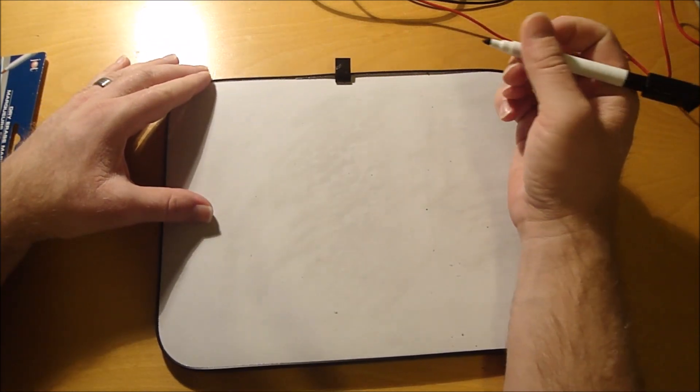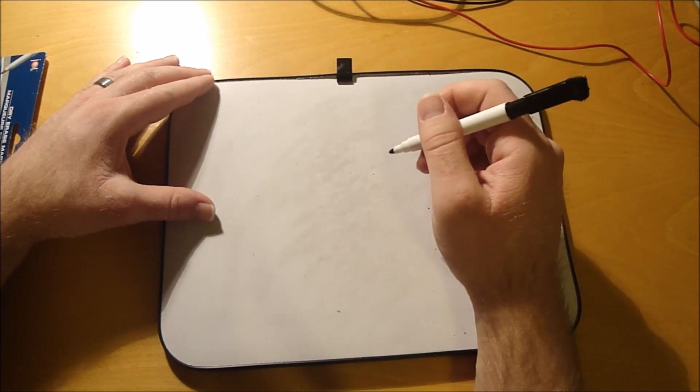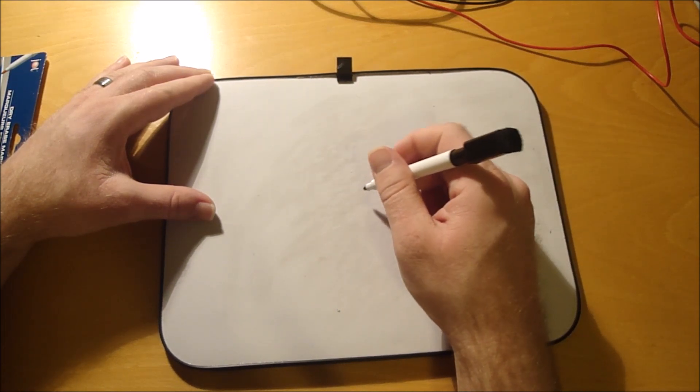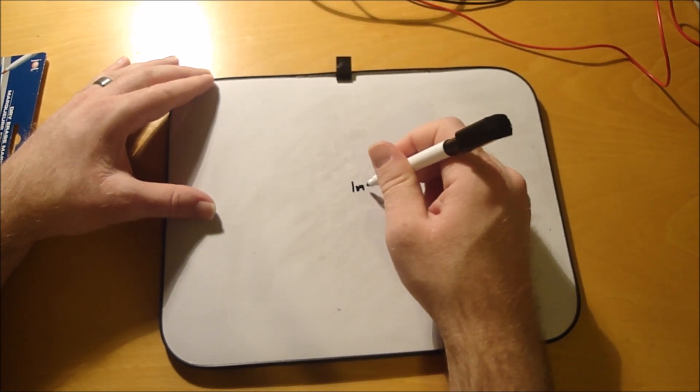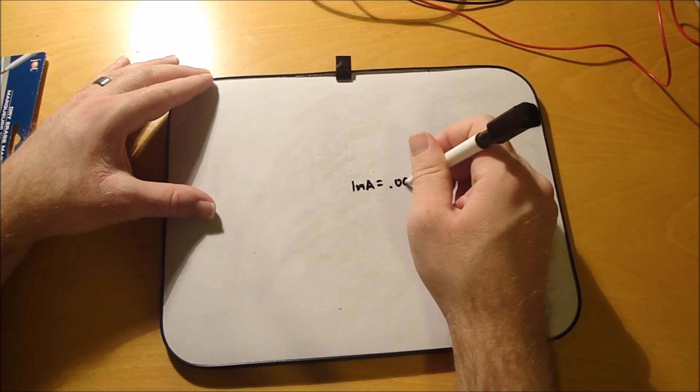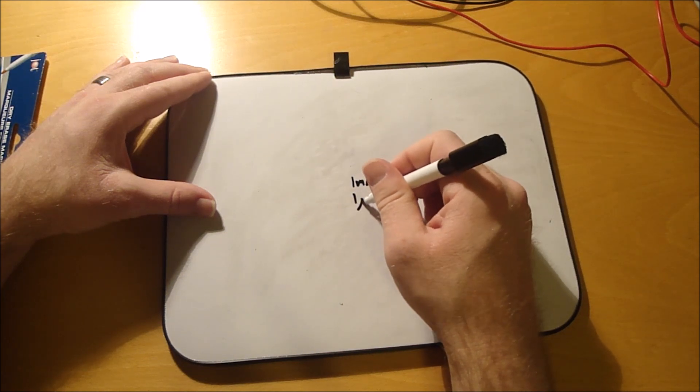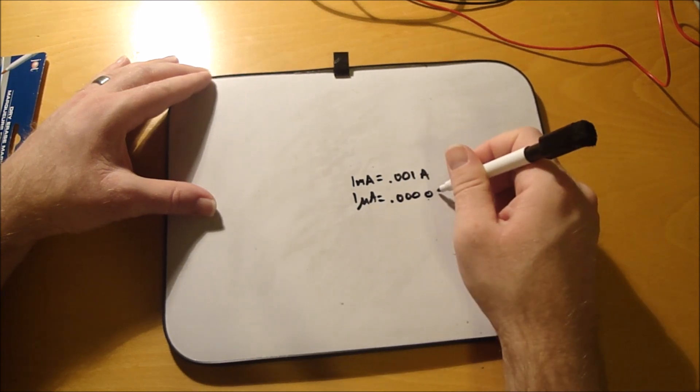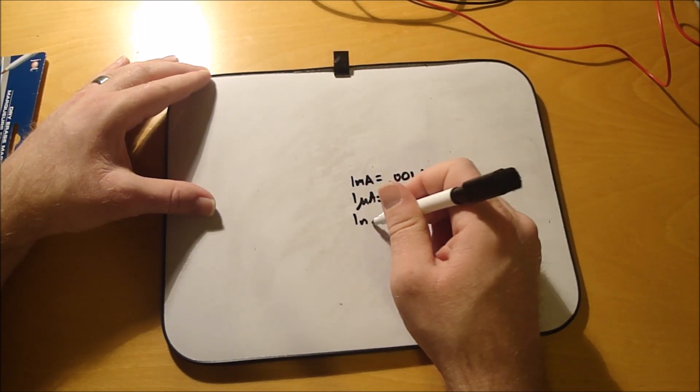So let's say you got, let's just start with milliamps. So one milliamp equals 0.001 amps, and one microamp equals 0.000001 amps, and then one nanoamp equals 0.000000001 amps.